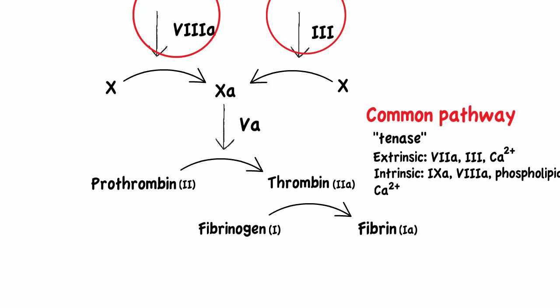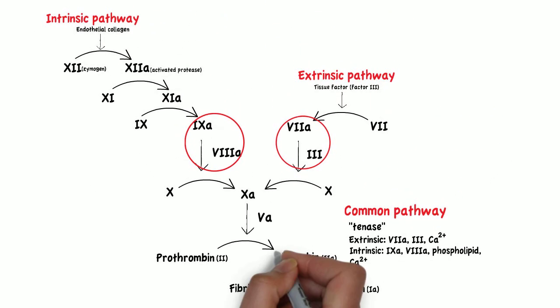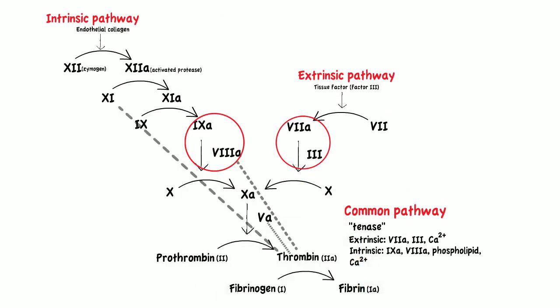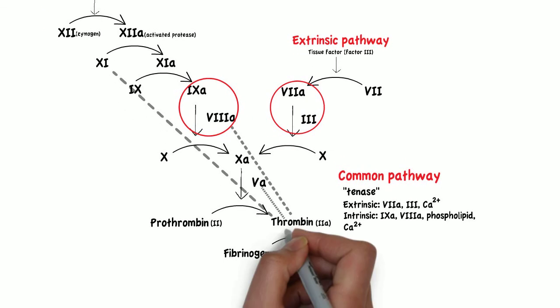Thrombin also activates other factors in the intrinsic pathway, such as factor 11, as well as the cofactors 8, 5, and factor 13.